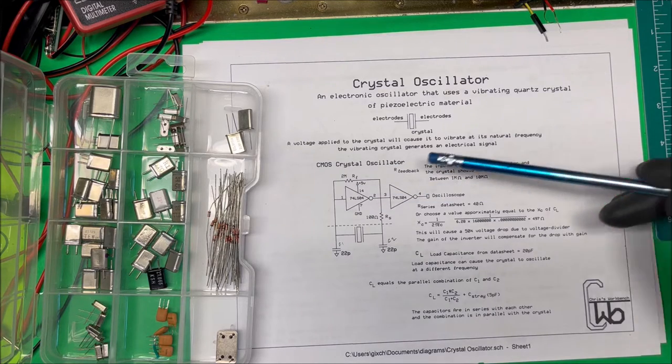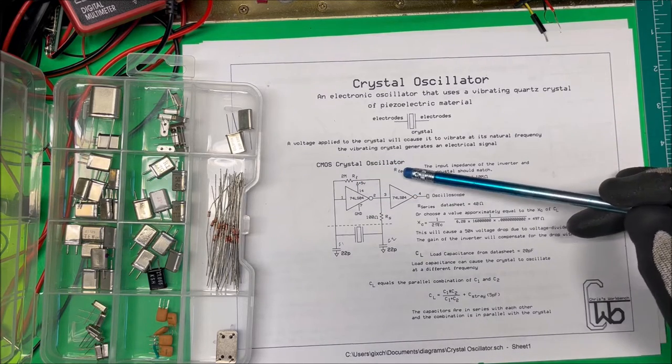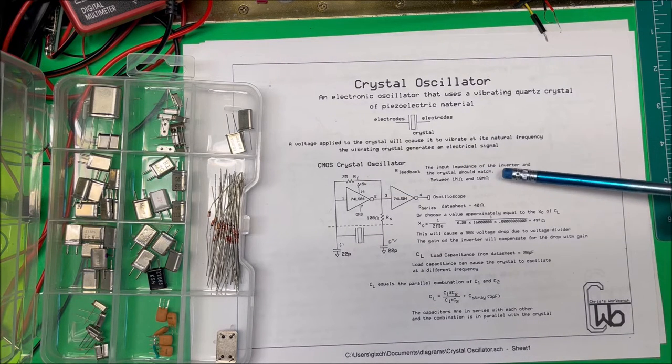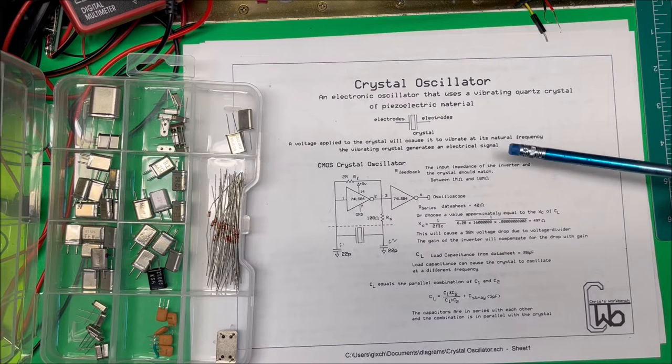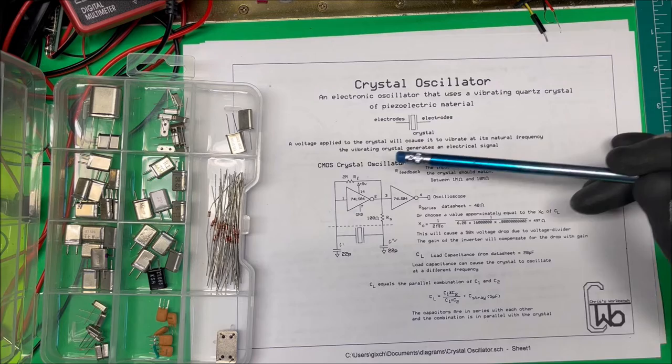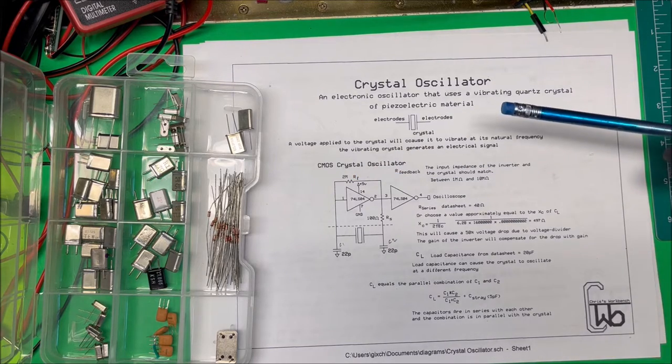Now on this inverter, the first resistor you're going to need is the feedback resistor. The input impedance of the inverter and the crystal should match each other, and that's going to be somewhere between 1 megaohm and 10 megaohms. I wrote down 2 megaohms here. I think I had a 1 megaohm, so I put that in there.